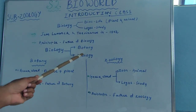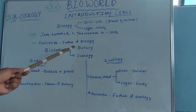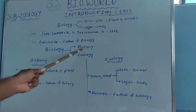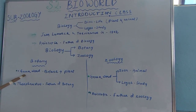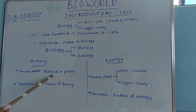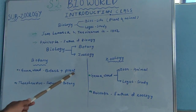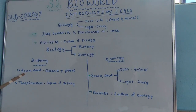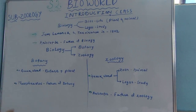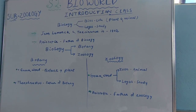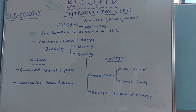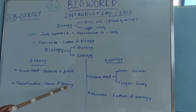One is botany and another is zoology. The term botany was first derived from a Greek word 'botanē' which means plant. So botany is the branch of biology which deals with the study of plants. Theophrastus was regarded as the father of botany.